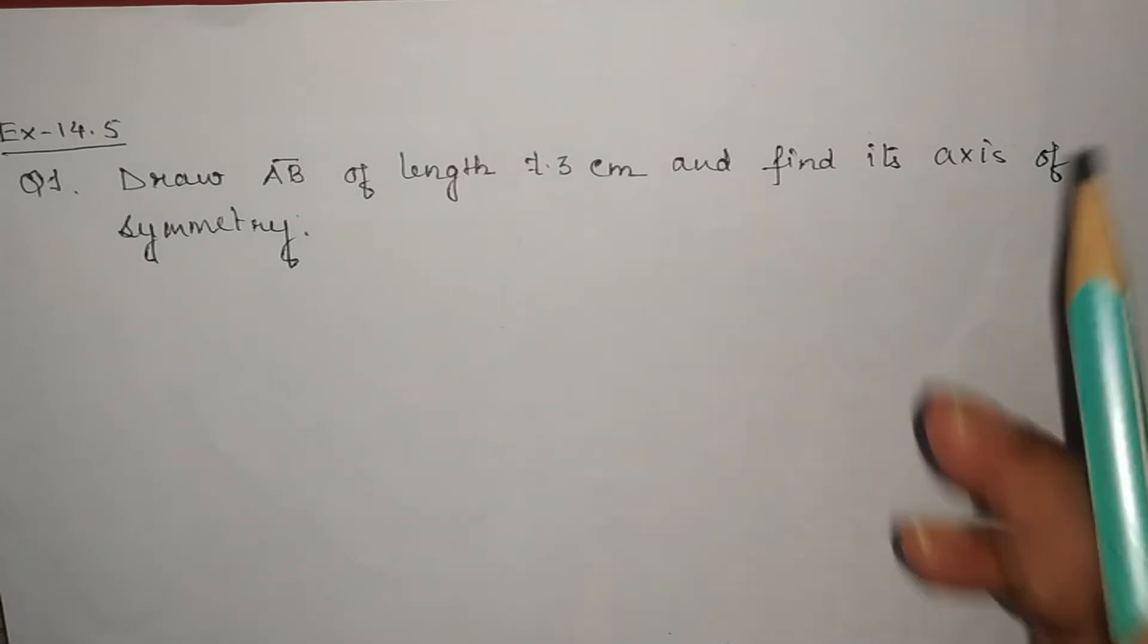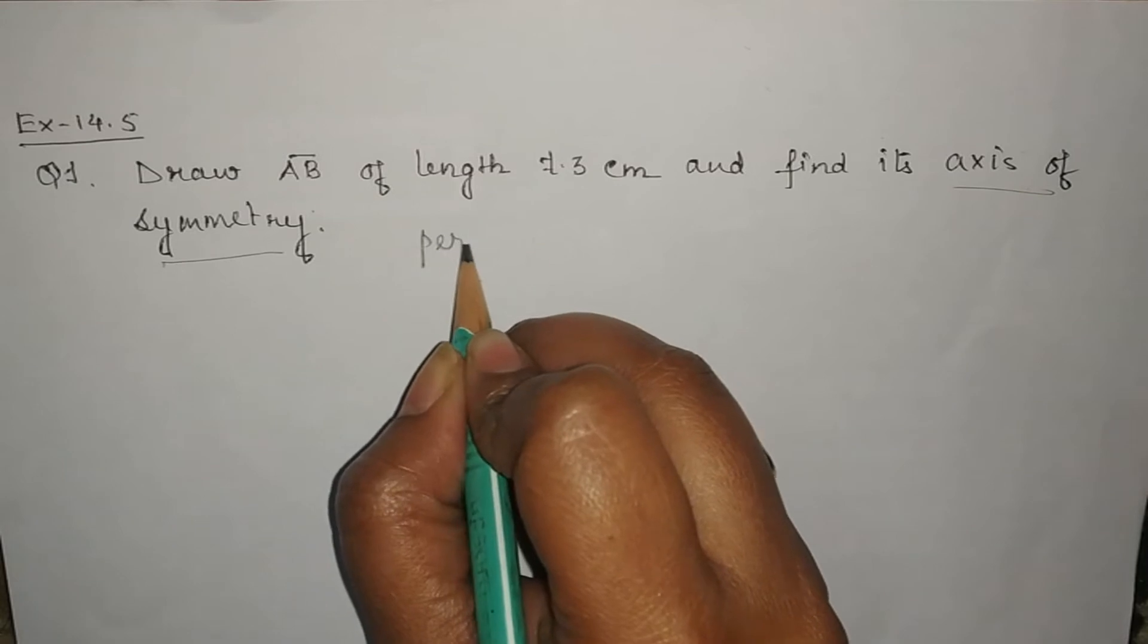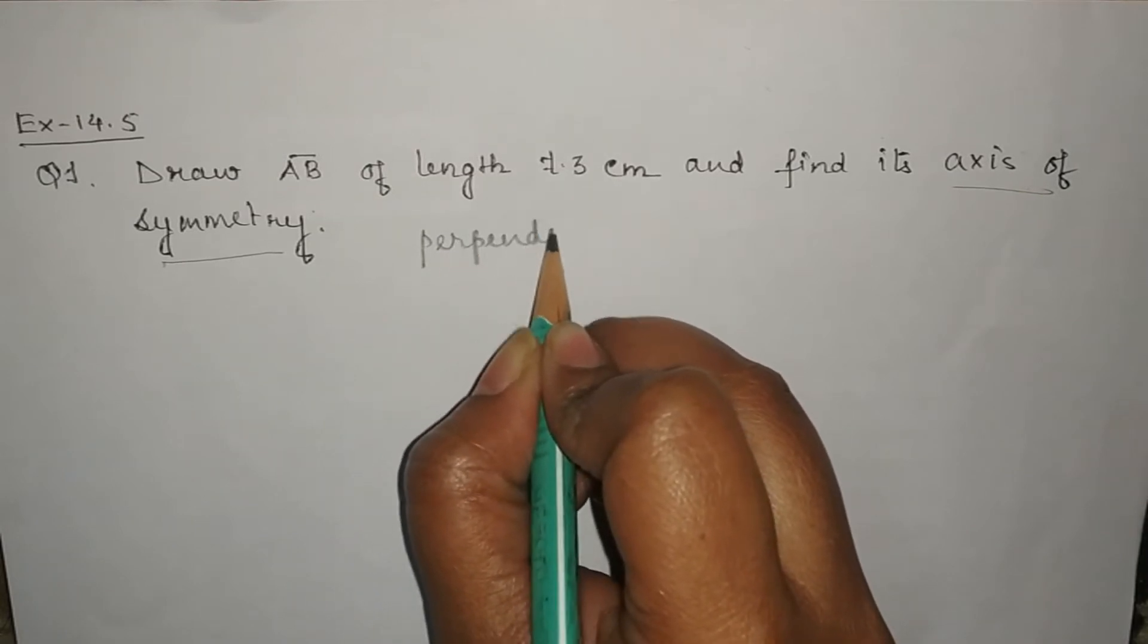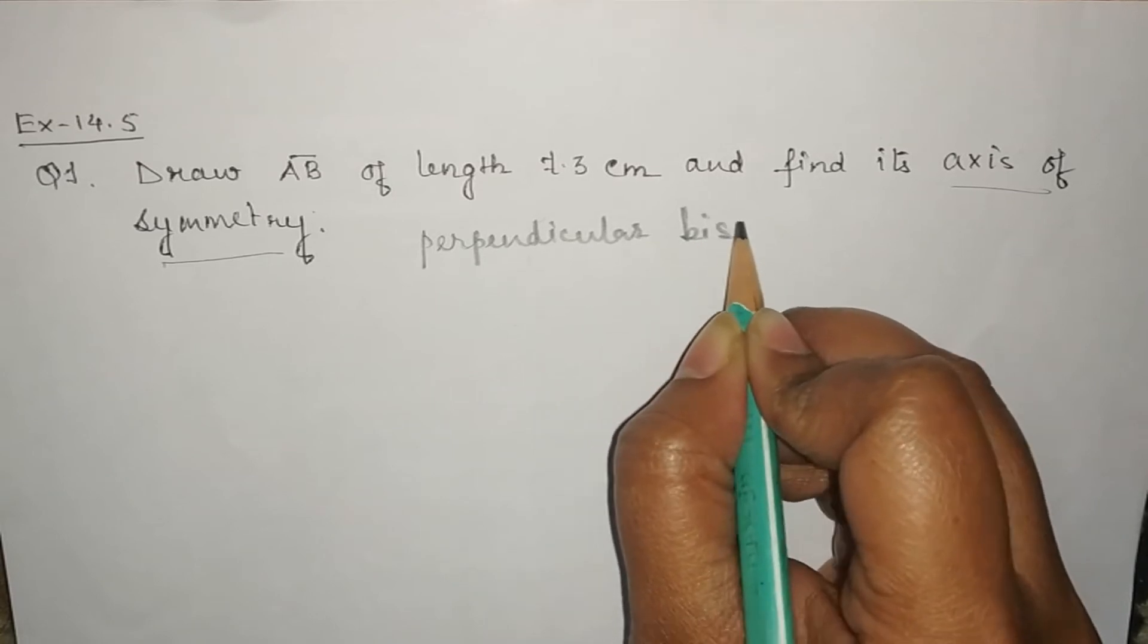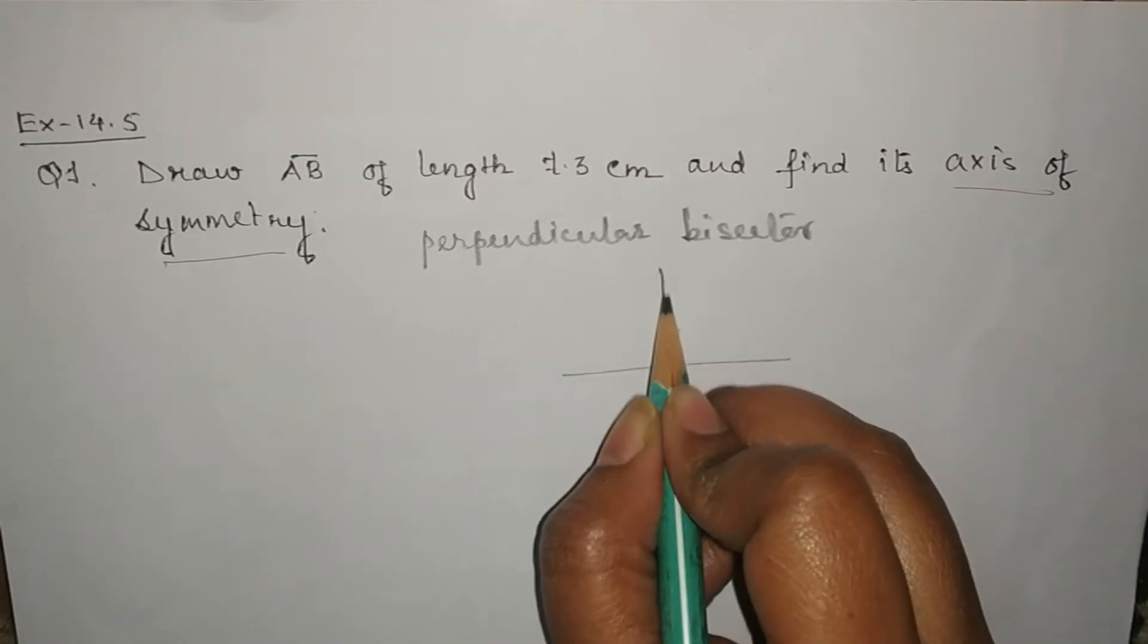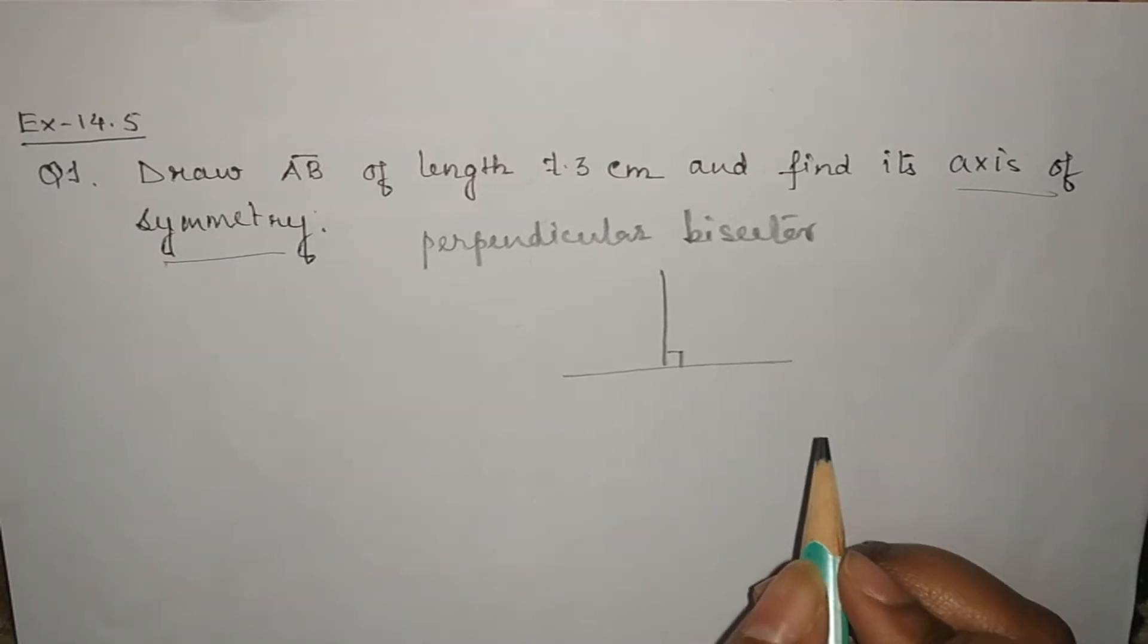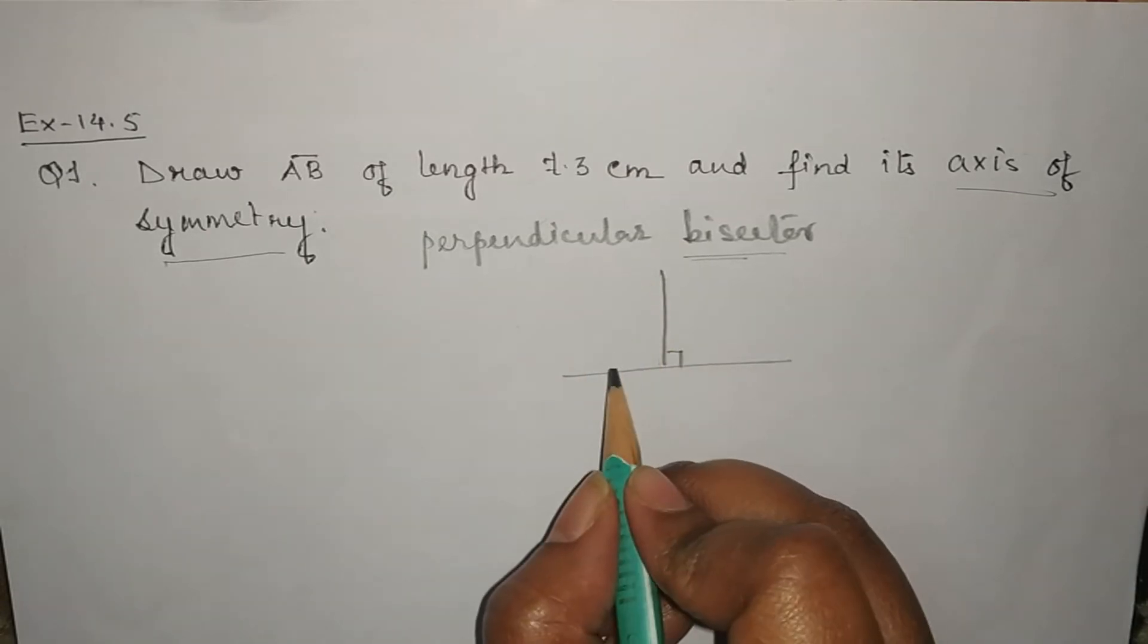Now what is axis of symmetry? Axis of symmetry is perpendicular bisector. Now what are perpendicular bisectors? Perpendicular means the line which makes 90 degree with the baseline and bisector means it will divide the line into 2 equal halves.